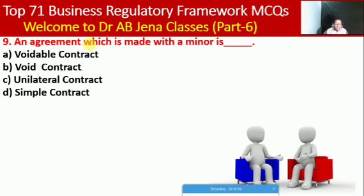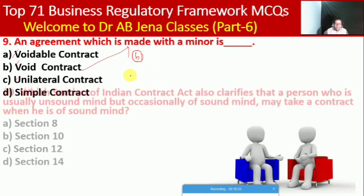Next MCQ: an agreement which is made with a minor — what type of contract is it? Whether voidable contract, void contract, unilateral contract, or simple contract. Here B is the right option — it is a void contract.